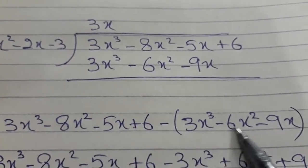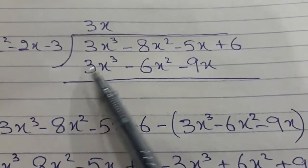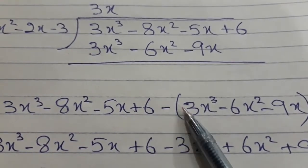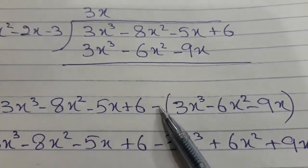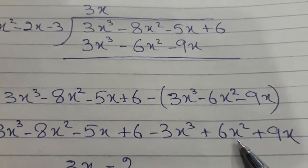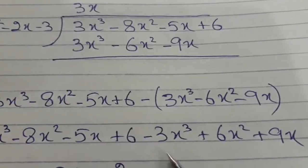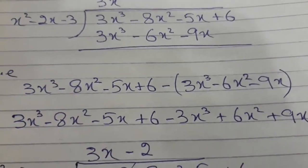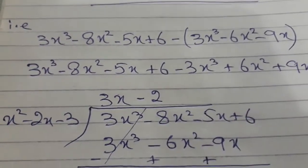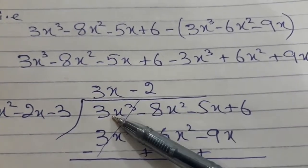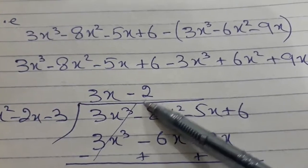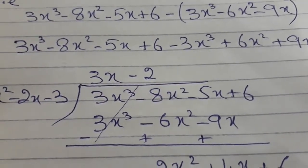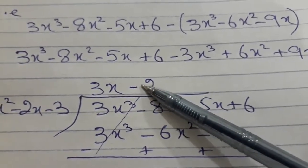When we subtract, all the signs change: plus becomes minus, and minus times minus becomes plus. So it was plus 3, now it is minus 3; it was minus 6, now it is plus 6. Now 3x cubed minus 3x cubed cancels out, and minus 8 plus 6 gives minus 2.